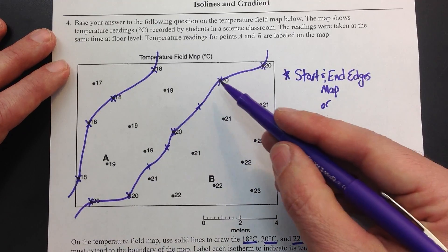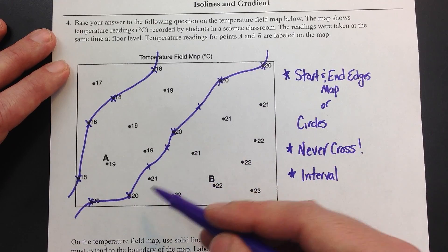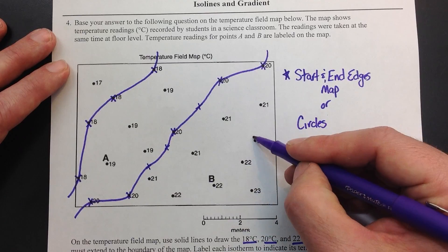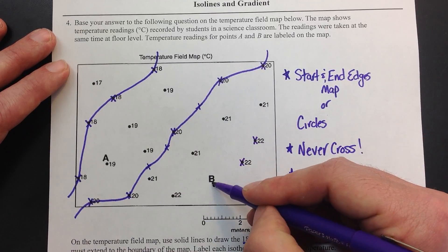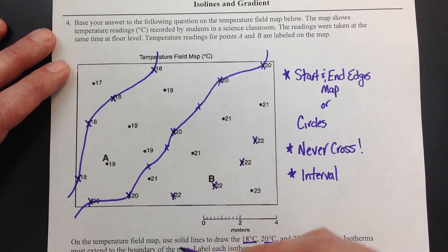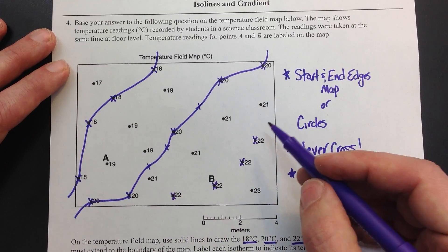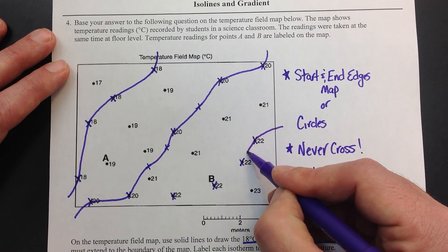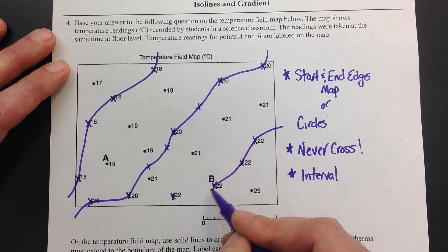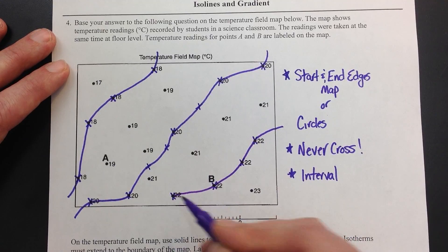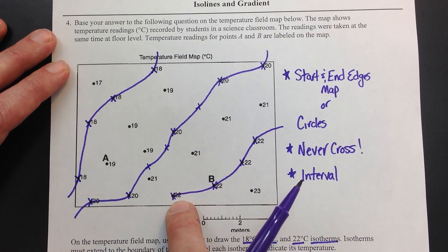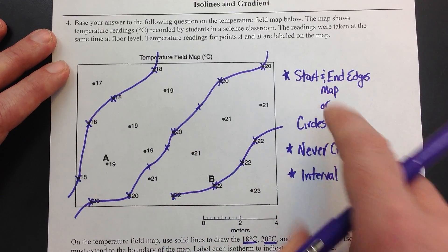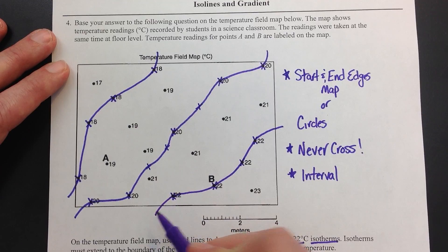If you miss a hidden value and put your line between values that it can't pass through, you'll have an issue. There are no 20s over here, so I can't swing this around between values that 20 does not fall between. For the 22, I get a 22 value here, here, here, and here. I'm going to begin off the map, come down just like so. If I stop within the map, that would be incorrect — I'm going to start and end at the edges of the map, running it off like so.